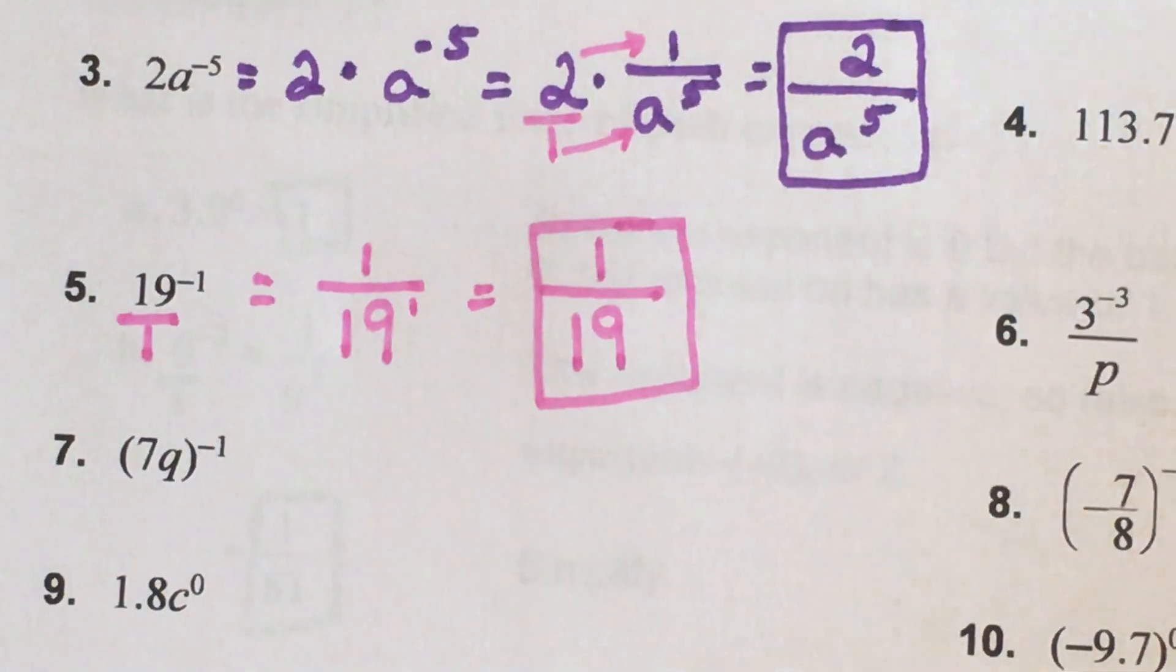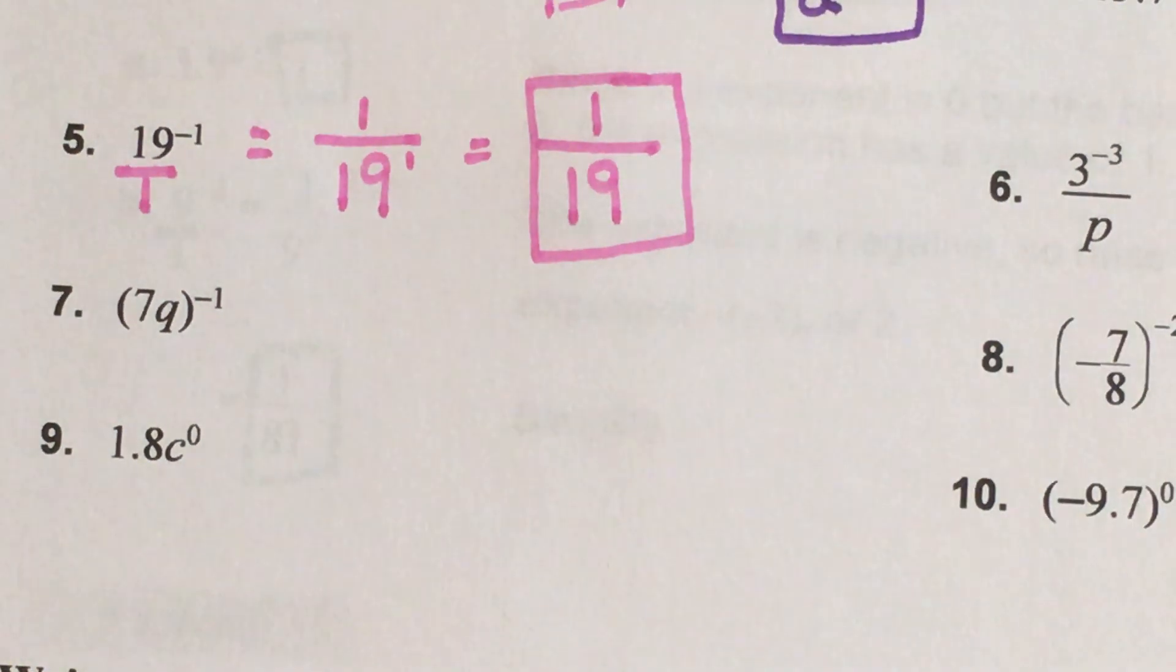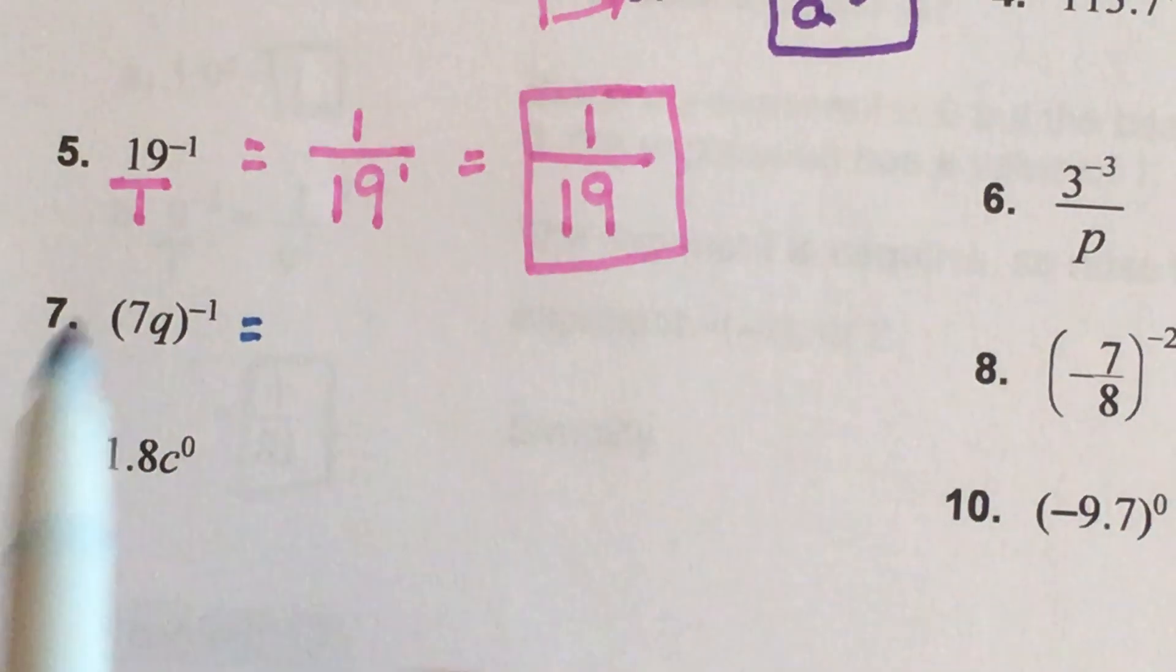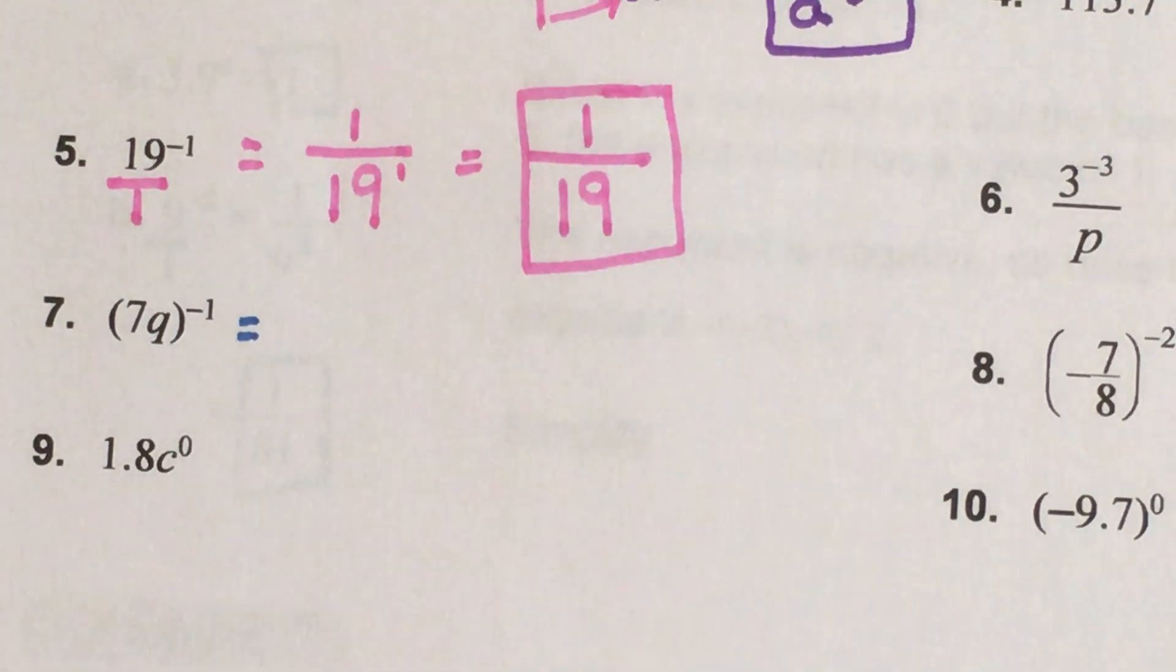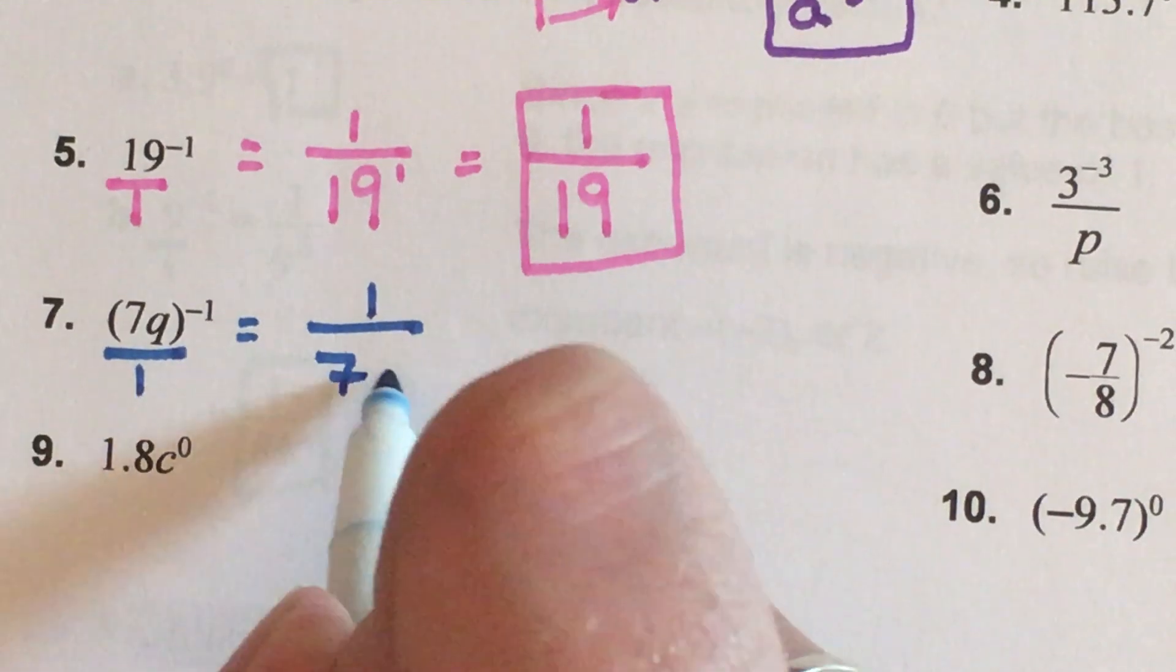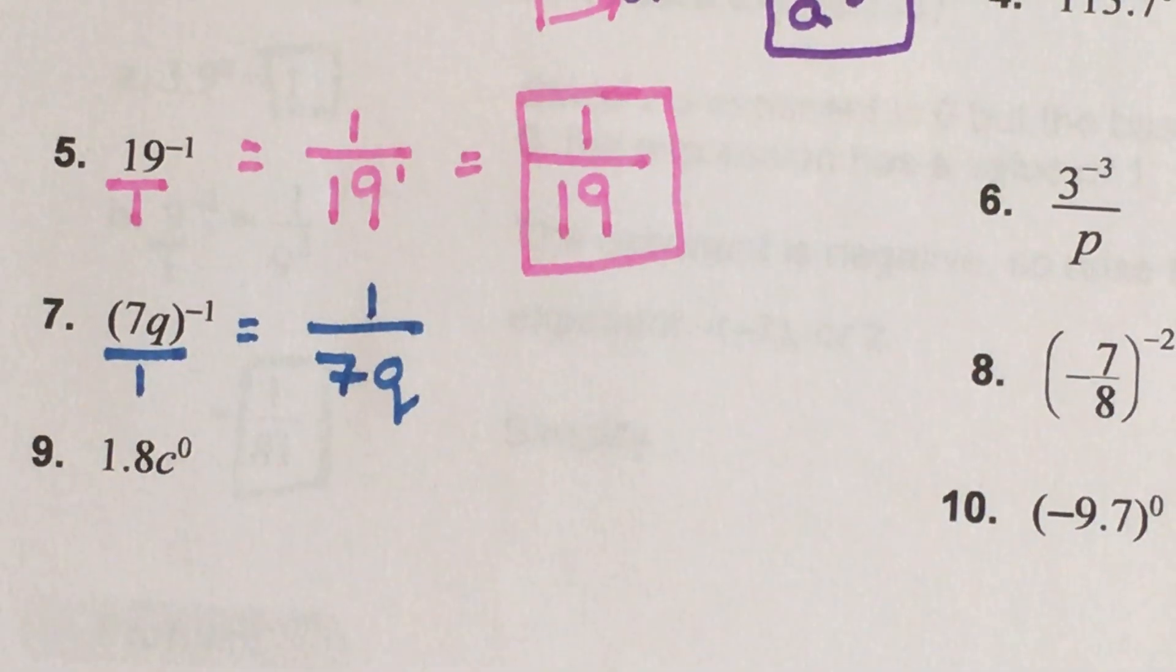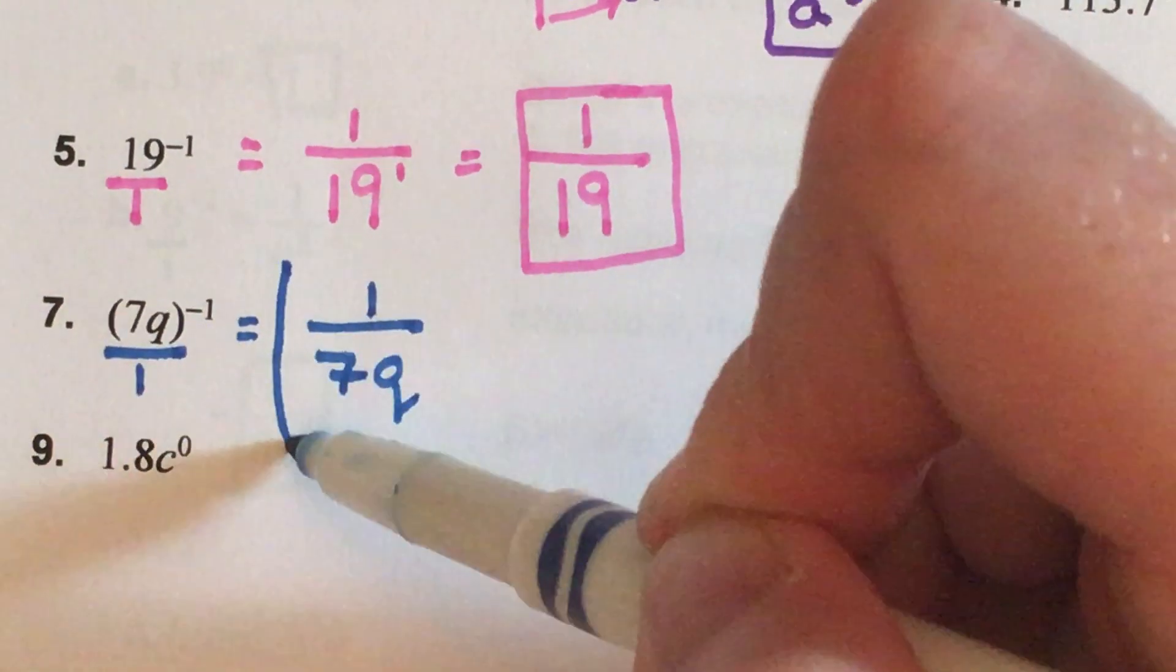Number seven. This time the 7 and the q were in parentheses. That means everything in the parentheses is going to be using the reciprocal property. So all of this had a one underneath of it and therefore all of this will now go underneath of a one. And for the reason that we stated in problem number five, I do not need to put that there is an exponent of a one, it's just not necessary, it's understood.